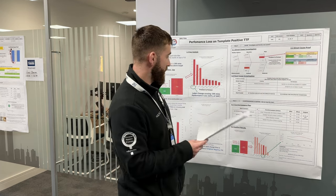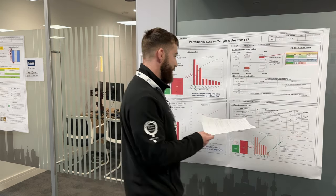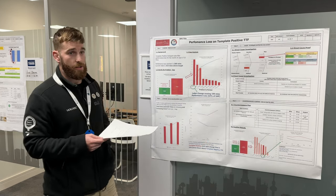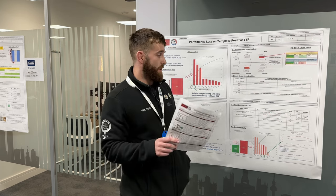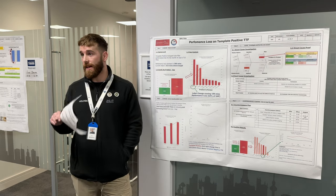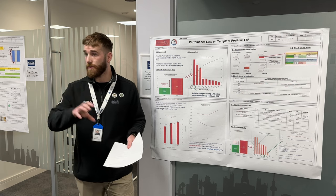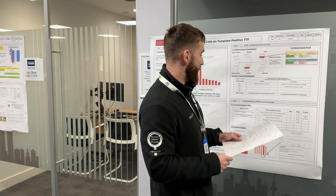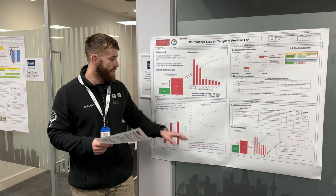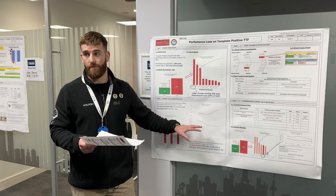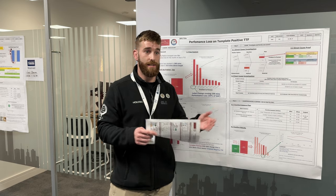Moving on to the countermeasure plan: the first two actions were around training guides. George is going to create a training guide - still an ongoing action. The template positive team are now working with George to make a training guide so it looks the same as the template negative one, and both teams are working together to make sure they're doing it the same way. There's also a longer ongoing issue around training the trainer - we did have a new starter in the positive line around this time.